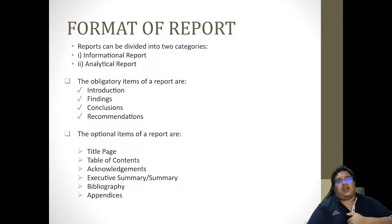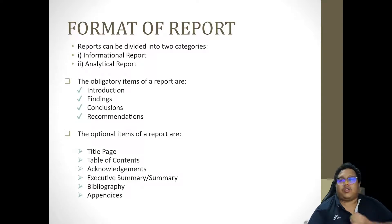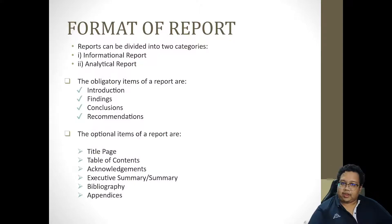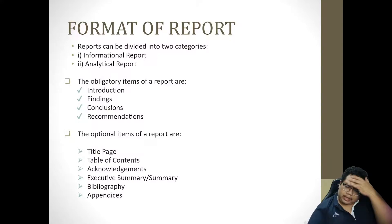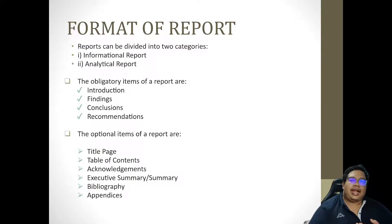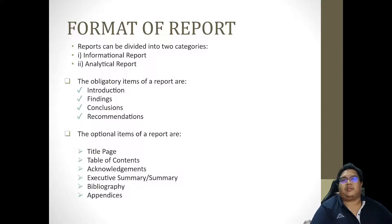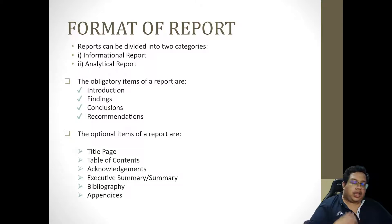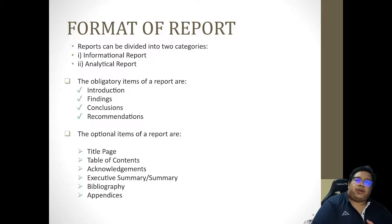The format of a report: reports can be divided into two types — informational report or analytical report. You must remember that there are obligatory and optional items. The most important obligatory items you must have are the introduction, the findings, the conclusions, and the recommendations. Optional items include the title page, table of contents, acknowledgments, executive summary, bibliography, and appendices. But a good report consists of both.